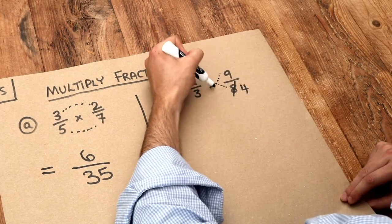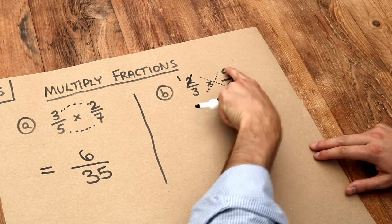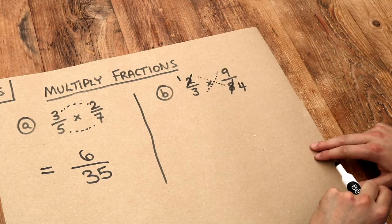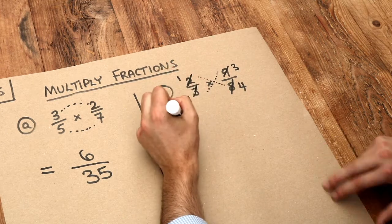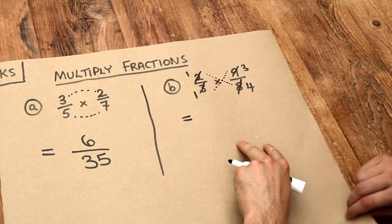And then this diagonal, is anything I can cross-cancel? Well 9 and 3, they both have a common factor of 3. So we can divide the 9 by 3 to get 3, and the 3 by 3 to get 1, and that makes the multiplication much easier.